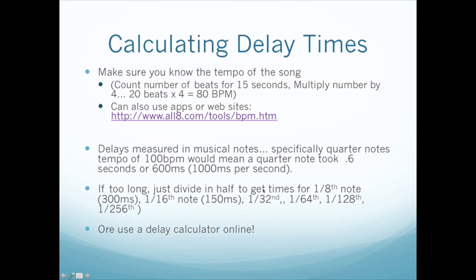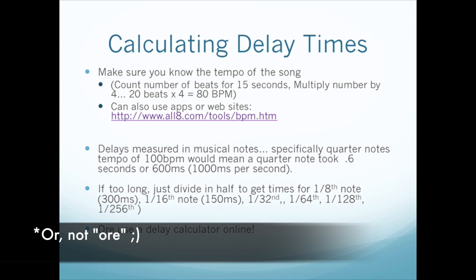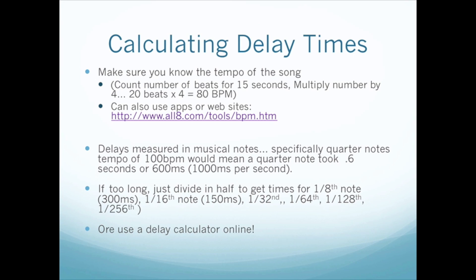If you're calculating delay times manually, the first thing you need to do is know the tempo of the song. Most DAWs have a default tempo, so you may have built your entire track around that. Or, if you're recording something you wrote previously, you can count the number of beats for 15 seconds and multiply by 4 to get your tempo. For example, 20 beats in 15 seconds times 4 gives you 80 BPM. You can also use apps or websites to calculate your tempo.